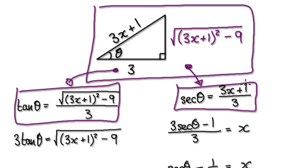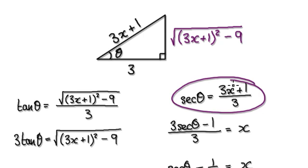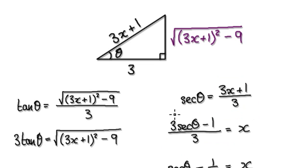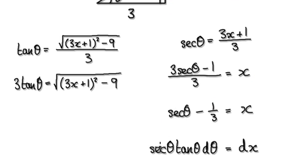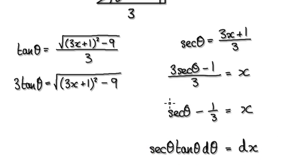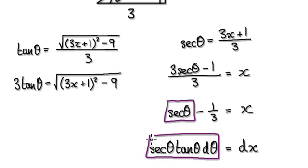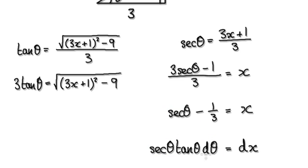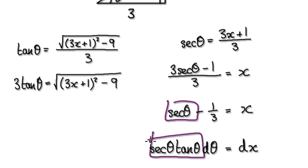Now let's look at this bit here. Rearrange — make X the subject. That will then give you this. Then differentiate it, it will then give you this. Remember, we've done this many times — if you differentiate this, it will then give you this. We've done this many times. Differentiate this, it will then give you this.